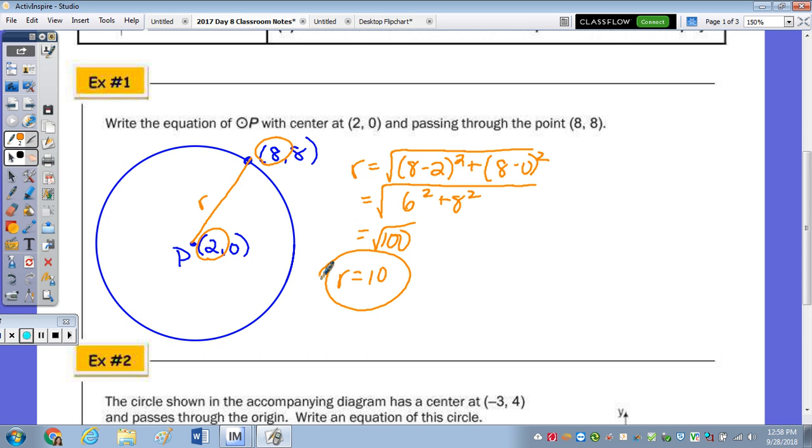Now I take this and this to write the equation. So the equation for circle P with center 2, 0 is going to be x minus 2 squared. Remember, it's the opposite. And I can write the y minus 0 squared, but y minus 0 would just be y squared equals radius squared, which is 100.